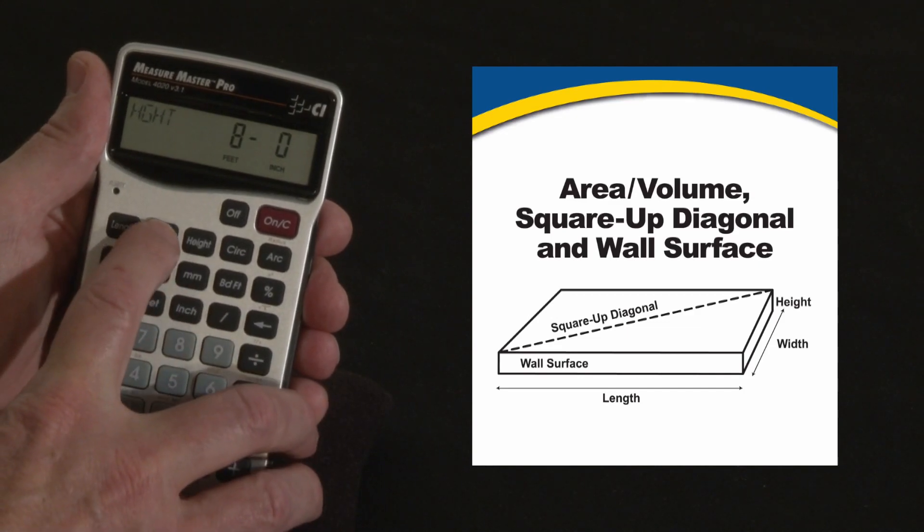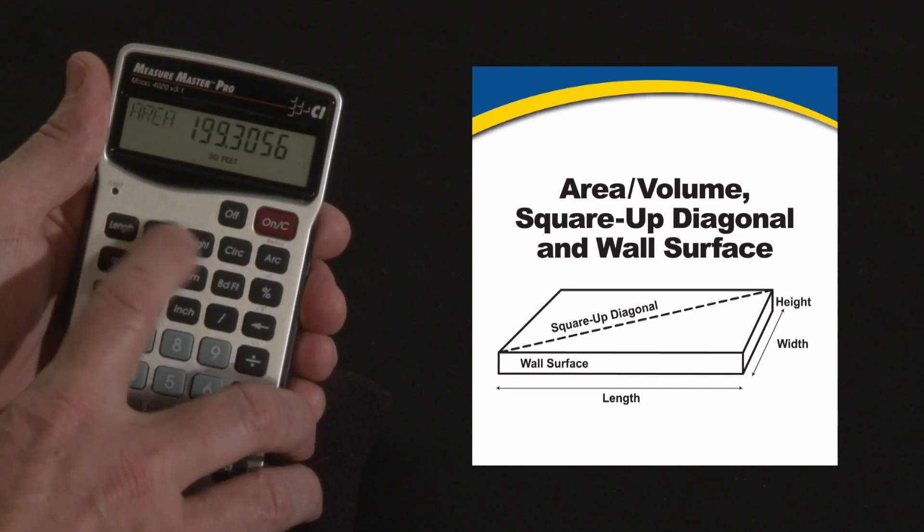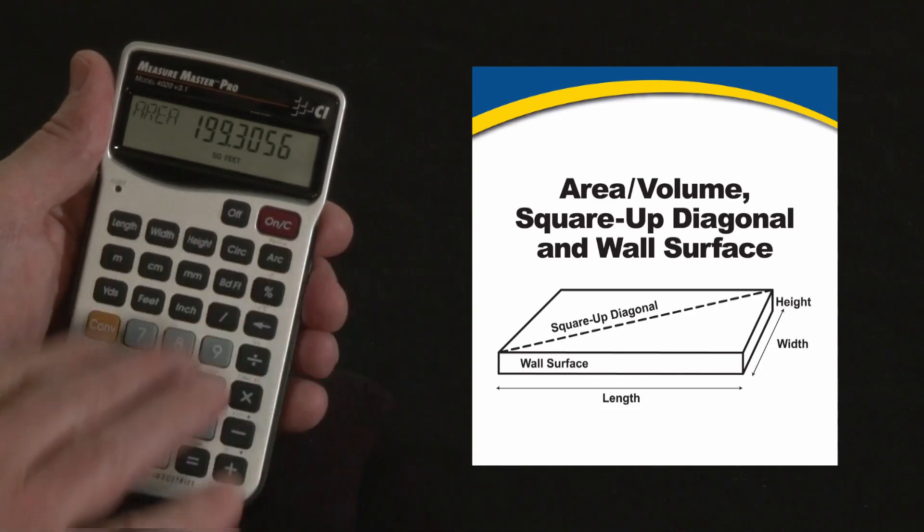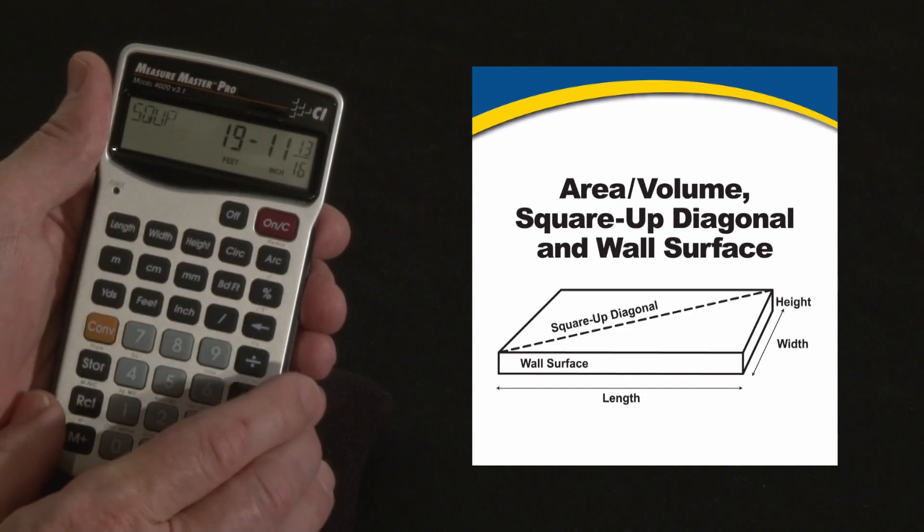So now I can come back to the Width key and press. The first press will confirm the width at 13.8, but I press it the second time, and there's our total square footage of this room, the floor square footage, 199 square feet. Press it again.